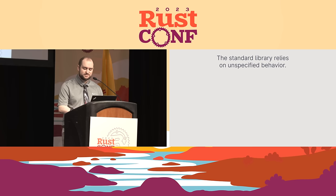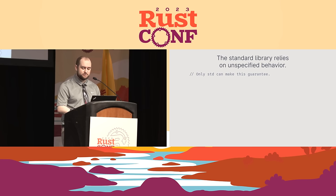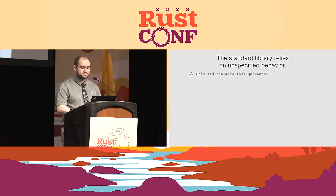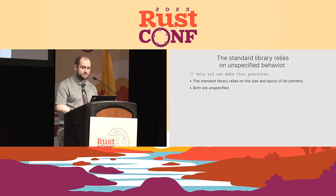There is one interesting matter in which the standard library is unique: the fact that it relies on unspecified behavior. There is a comment in the standard library that says only standard can make this guarantee, and a handful of similar comments can be found throughout. During research for this talk, I found two primary situations where the standard library relies on behavior not guaranteed to other libraries. One involves niche value optimization — that situation is not unspecified behavior, but rather it is not guaranteed to compile at all. The other case is where the standard library relies on the size and layout of fat pointers. Only one problem: both are unspecified. The compiler guarantees nothing about this code. If the layout of a pointer changes, the behavior will quietly change. Worse, if the size of a pointer changes, that would result in undefined behavior, as some code would be performing an out-of-bounds read.